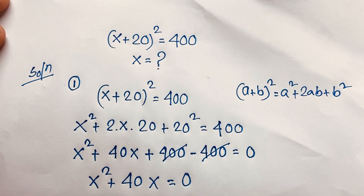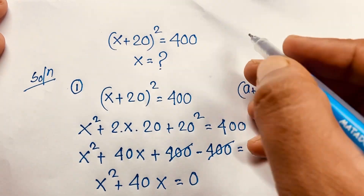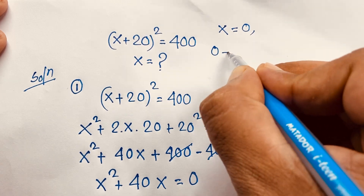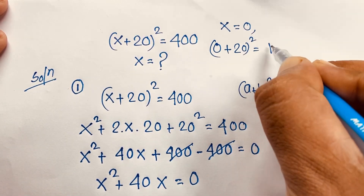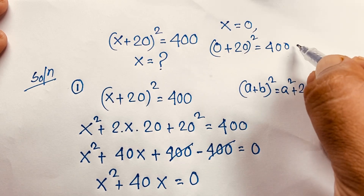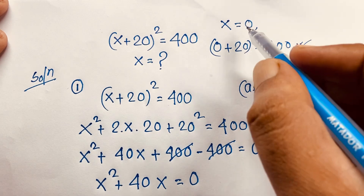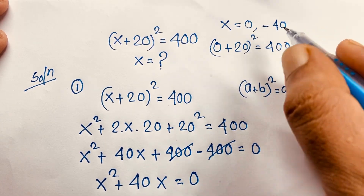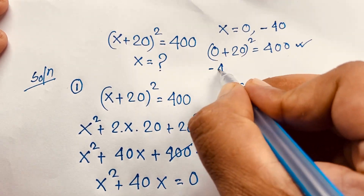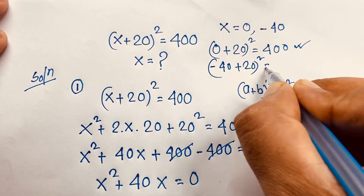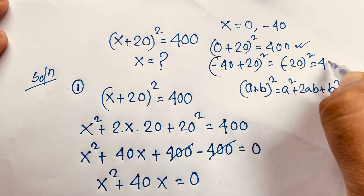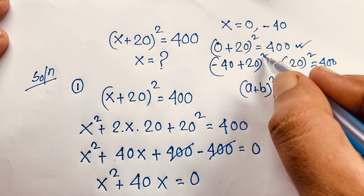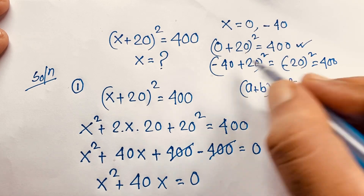Let's verify our answers. The question is (x + 20)² = 400. If x = 0: (0 + 20)² = 20² = 400. Both sides are equal. If x = −40: (−40 + 20)² = (−20)² = 400. Since 2 is an even number, the result is always positive. Left-hand side equals right-hand side. Both answers are verified.